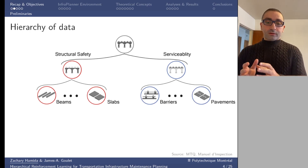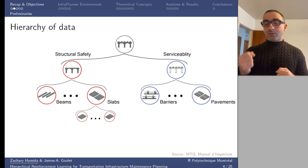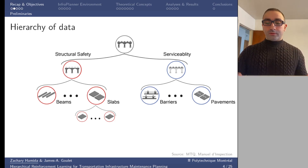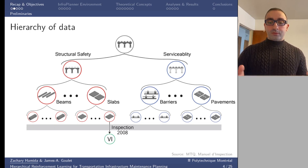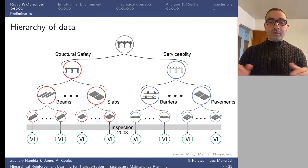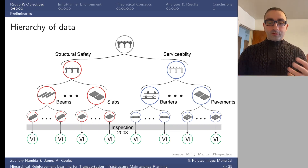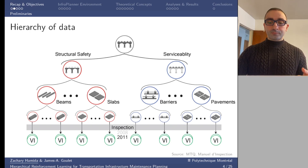Within each structural category we have a number of structural elements — for one bridge we could have two or three slabs and so on. Visual inspections are performed at the element level, so at a given year, say 2008, inspectors would perform visual inspections on all the elements within a given bridge. Visual inspections happen every two or three years depending on the importance of the bridge, so another round of inspections might happen in 2011, and so on.